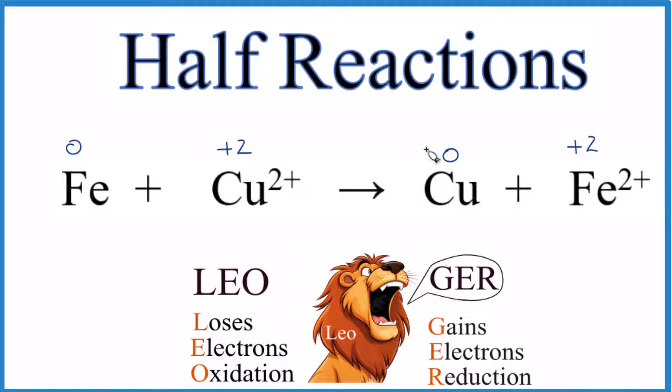So I've written the oxidation numbers above each substance here. In this case, ionic charge and oxidation number are the same. That's not always the case. So iron goes from zero to plus two. That's oxidized.